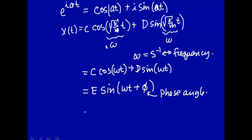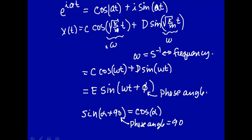Why is that? Well, remember from introductory trigonometry, the sine of some angle alpha plus 90 is a cosine of that angle, and here the phase angle would be 90. Let's show that graphically.